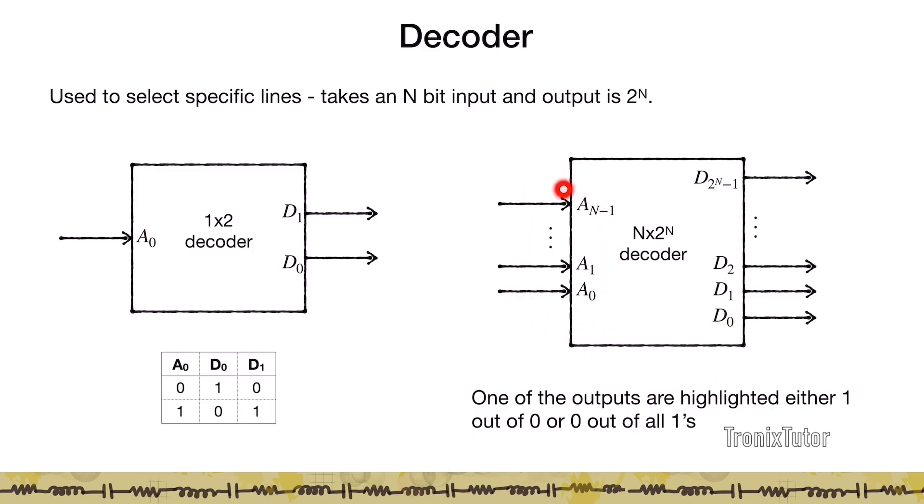I can generalize it to an n to 2 to the power n decoder. It takes in an n bit word and it has 2 to the power of n lines here. Based on this word, one of these lines goes high. This is used for selecting a certain line. We will see this a lot when we design memories in this course. Memory decoders are a large part of the delay in a memory circuit. One of the outputs is highlighted. We can design the decoder in such a way that it is either highlighted with a 1 or with a 0. That is, you make only one output 1 among all 0s or you make one output 0 among all 1s.